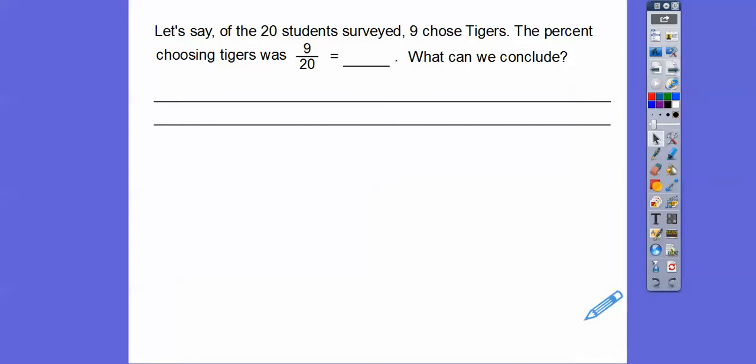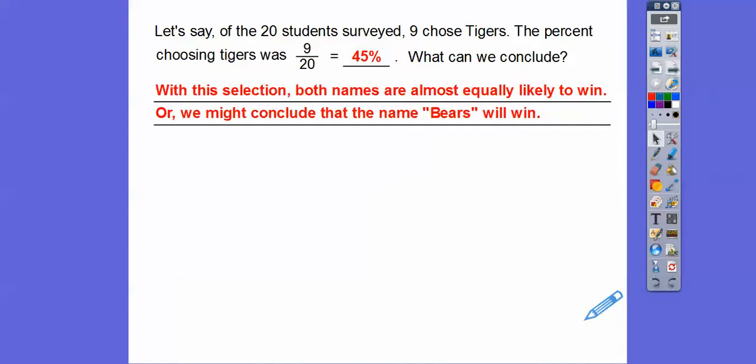So nine out of 20, I know 10 out of 20 is 50%. So nine out of 20 is 45%. So what can we conclude if we have that sample of 20? Well, with that selection, both names are pretty equal. It's definitely the bears would win. The tigers only got 45%, which means the bears got 55%, but it's pretty close. So we might have to do a couple of more samples of that. And if your whole class did that, you'd get different samples and then you can average all of those together.